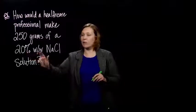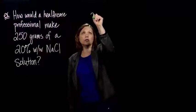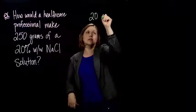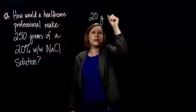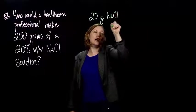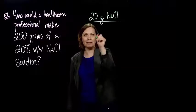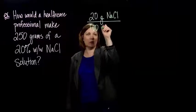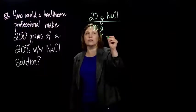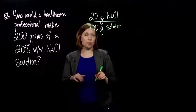20% weight per weight means we want 20 grams of sodium chloride to—do you remember what goes on the bottom? Which number? 100, and we're going to have grams again because they're both weight, grams of solution. That's what it means to be 20% weight per weight.